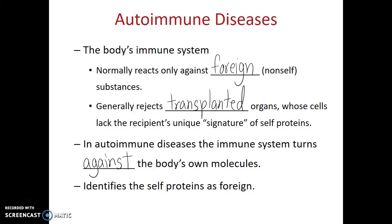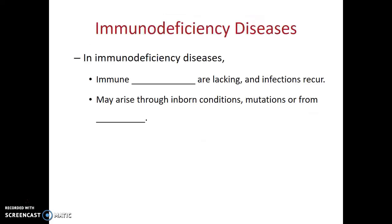An autoimmune disease is different from an immunodeficiency disease. In immunodeficiency diseases, certain immune components are lacking, and so infections recur. This may arise through inborn conditions, may be the result of a spontaneous mutation, or it could be the result of certain diseases.